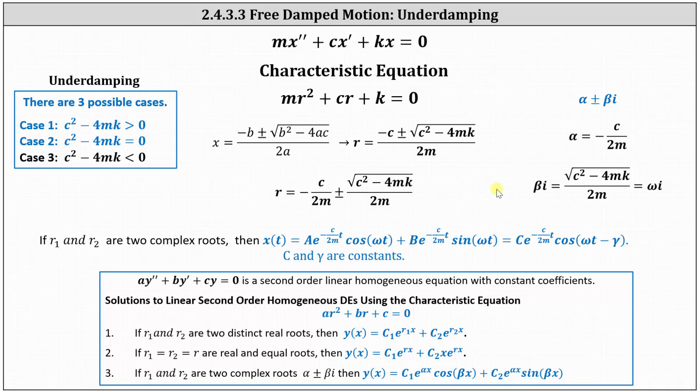In this case, our book shows the general solution in a slightly different way. Instead of using beta, omega is used, but omega equals beta. So if r sub one and r sub two are complex roots, then x of t equals a times e to the negative c divided by 2m times t, which is alpha, times cosine omega t, where omega is beta, plus b times e to the negative c divided by 2m times t times sine omega t.